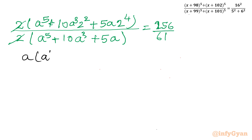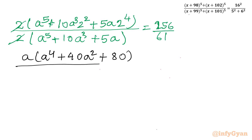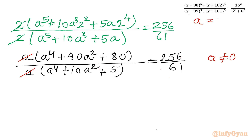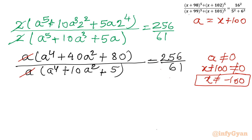Taking a common from the numerator gives a(a^4 + 40a² + 80), and taking a common from the denominator gives a(a^4 + 10a² + 5), equal to 256/61. We can cancel a, but we must make sure a ≠ 0, meaning x + 100 ≠ 0, so x ≠ −100.